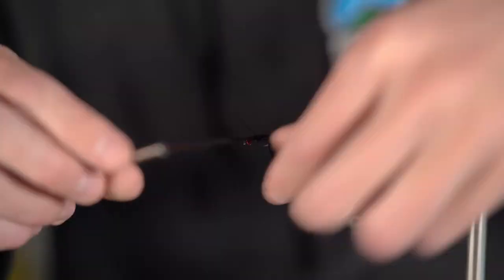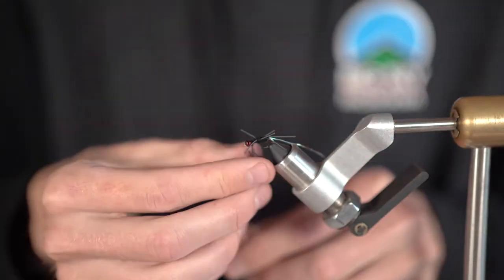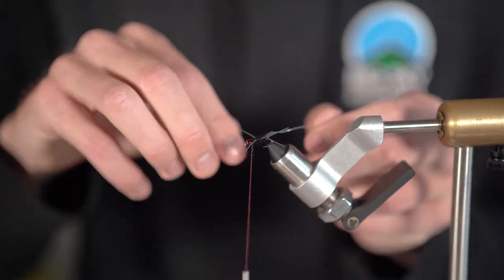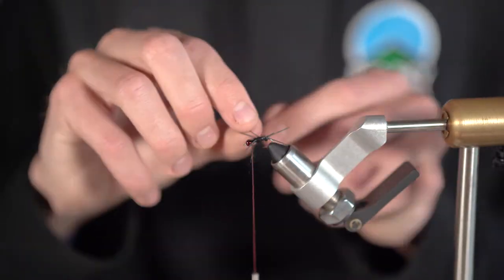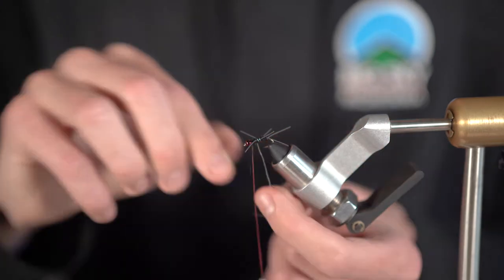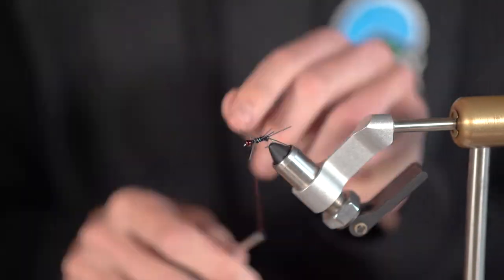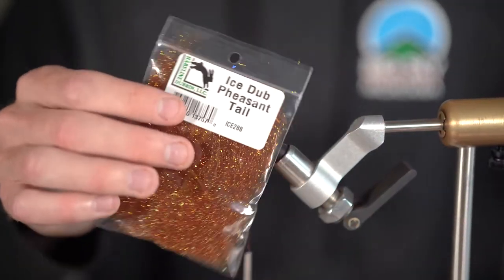Now grab a pinch of the black hairs dubbing and spin that onto the thread and wrap it just behind the ball head. Next wrap the silver wire to just behind the ball head as well in the opposite direction as the dubbing and tie that in with a few wraps and snip off the excess.